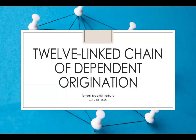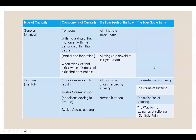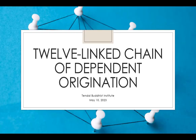Tonight we're covering a topic near and dear to me, which is the 12-linked chain of dependent origination. One of the reasons I've developed an affinity for this teaching is that the first two or three times it was presented to me, I could not follow it at all. That's kind of the experience most people have — it's quite complicated, with 12 pieces, but the main idea is to give us a more nuanced view of dependent origination, which is a foundational teaching of Buddhism.